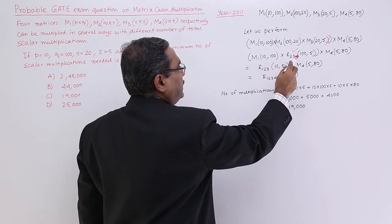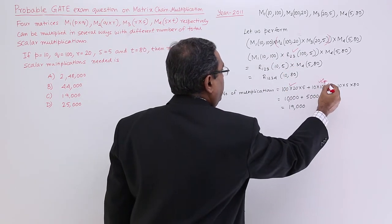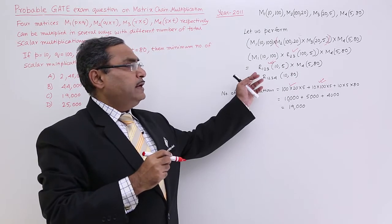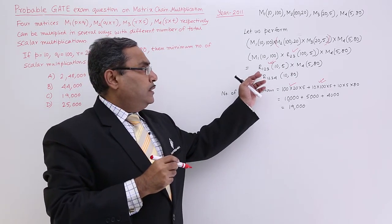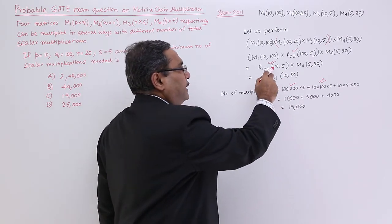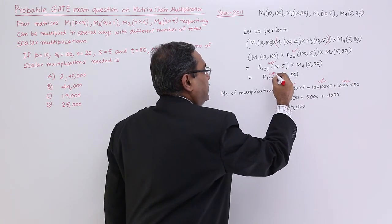Now, here when you are going for the multiplication, it is 10 into 100 into 5. So, 10 into 100 into 5 for this resultant matrix R1,2,3. Now, when you are doing this multiplication, you are getting this and that is nothing but 10 into 5 into 80. So, that is my 10 into 5 into 80. That is for that.